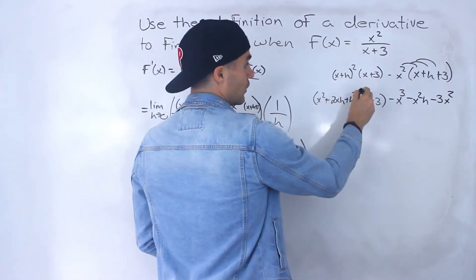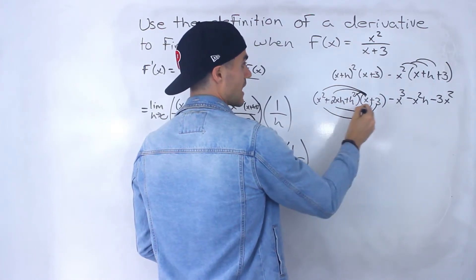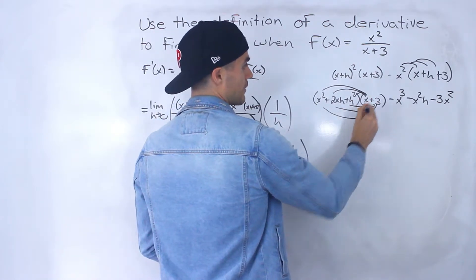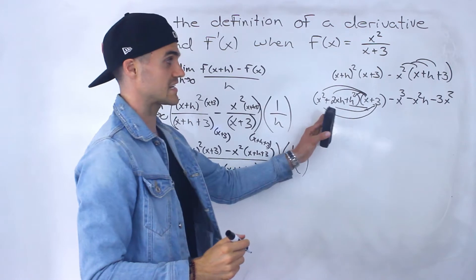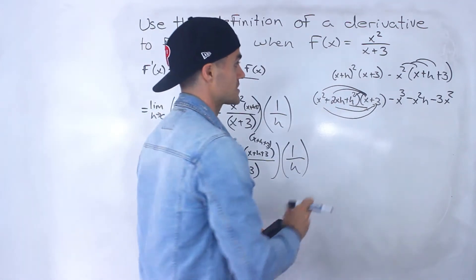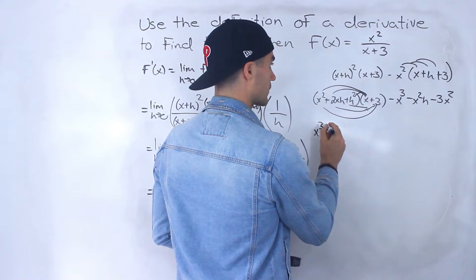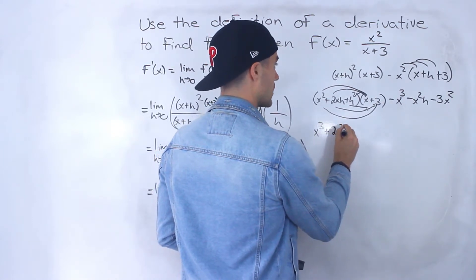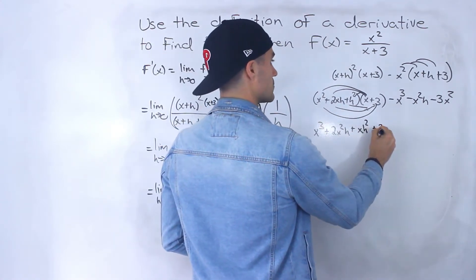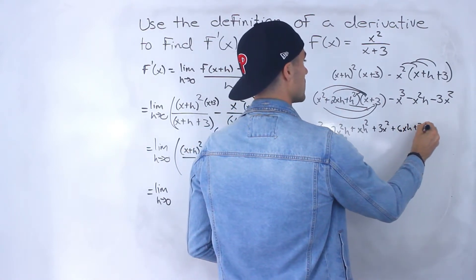Now we've got to FOIL out these brackets — this times that, and so on. We're taking three terms in this bracket multiplied by two terms, so we're going to end up with six terms. So we would get x cubed plus 2x squared h plus x h squared plus 3x squared plus 6xh plus 3h squared — being really careful with the algebra here.